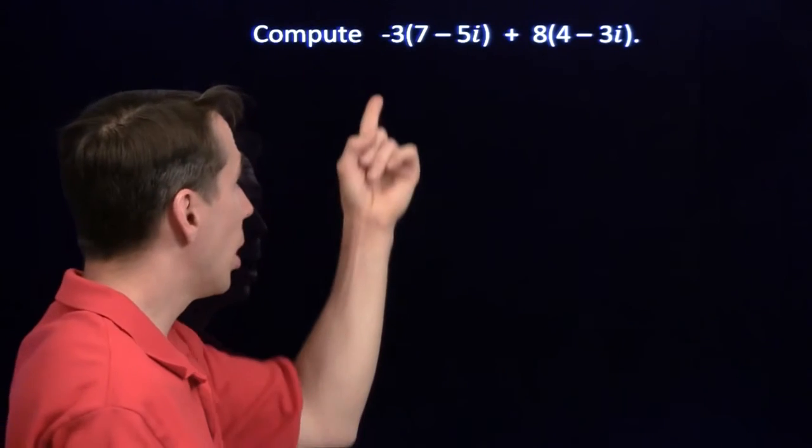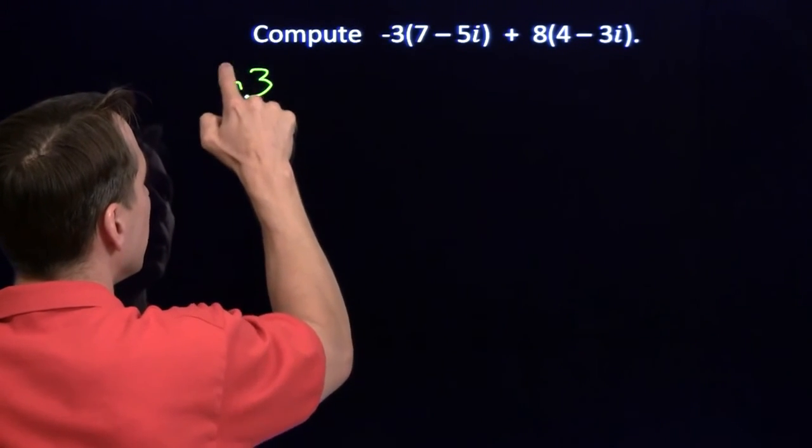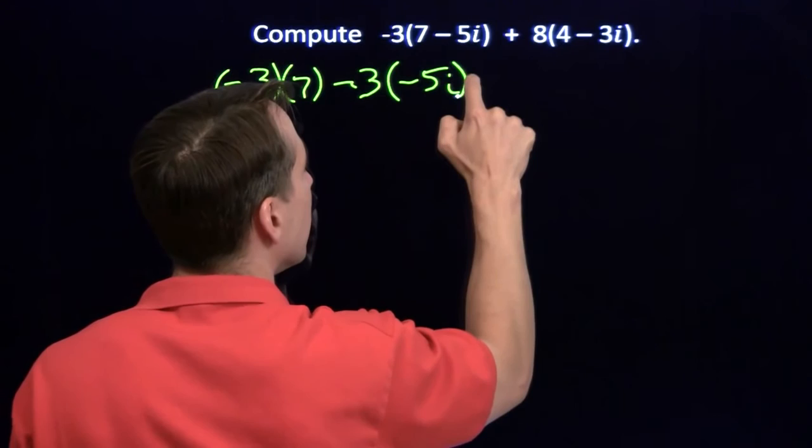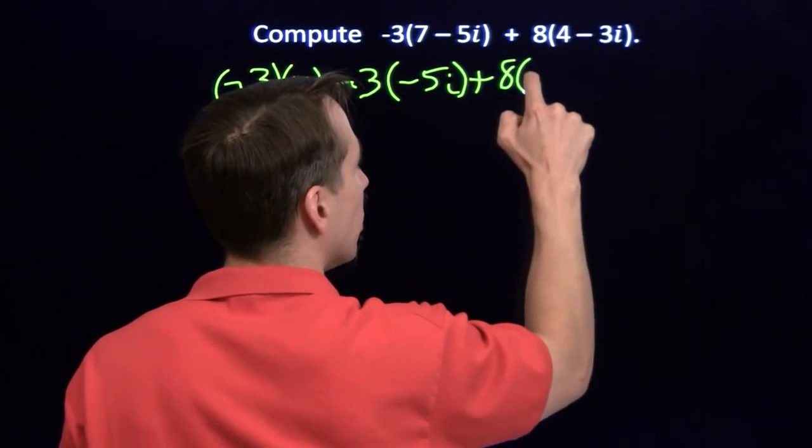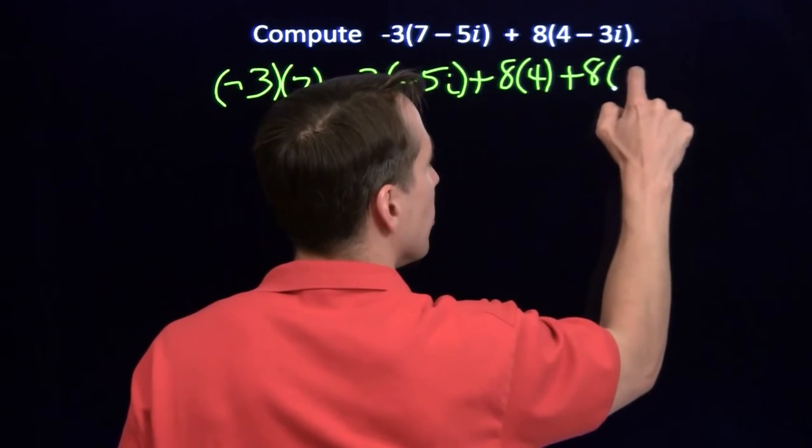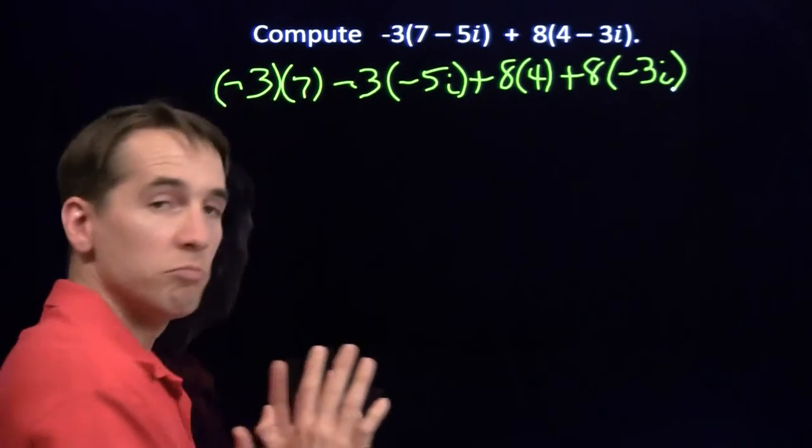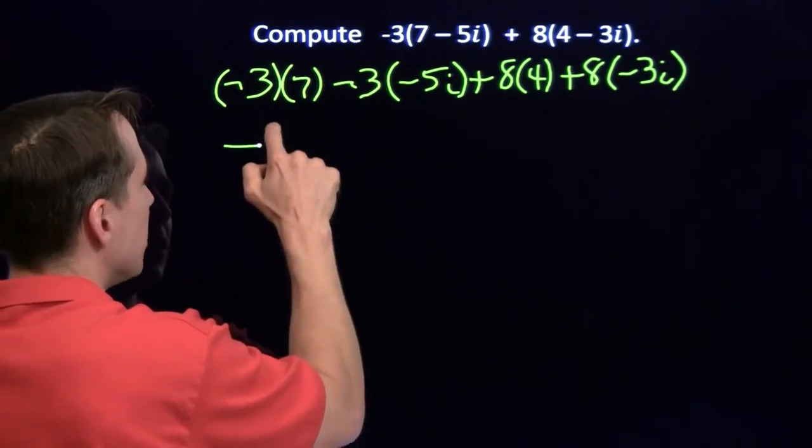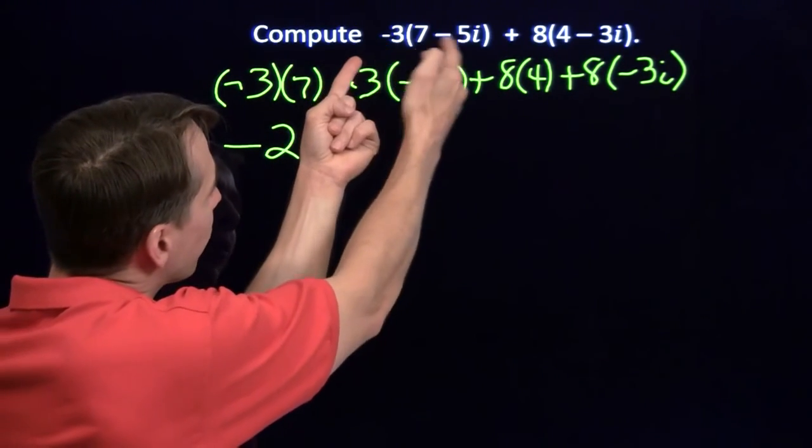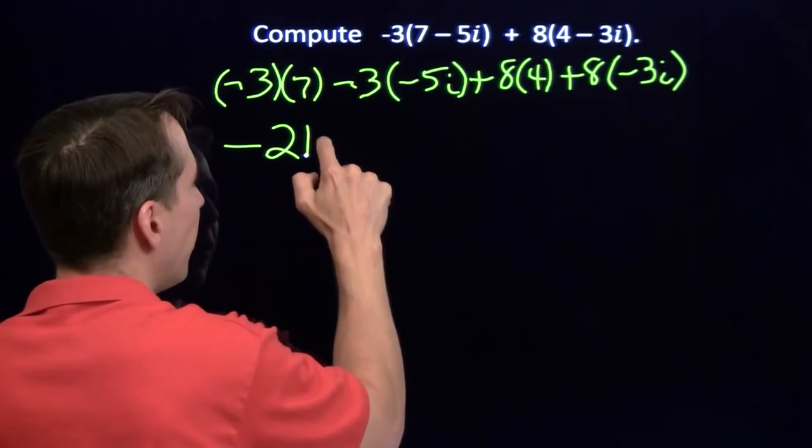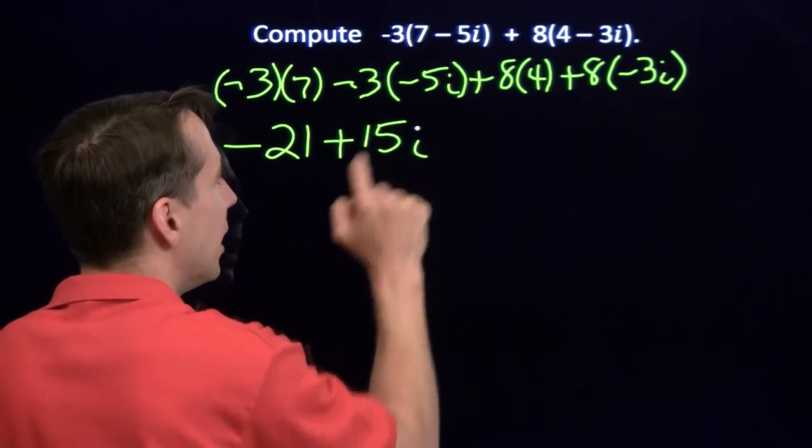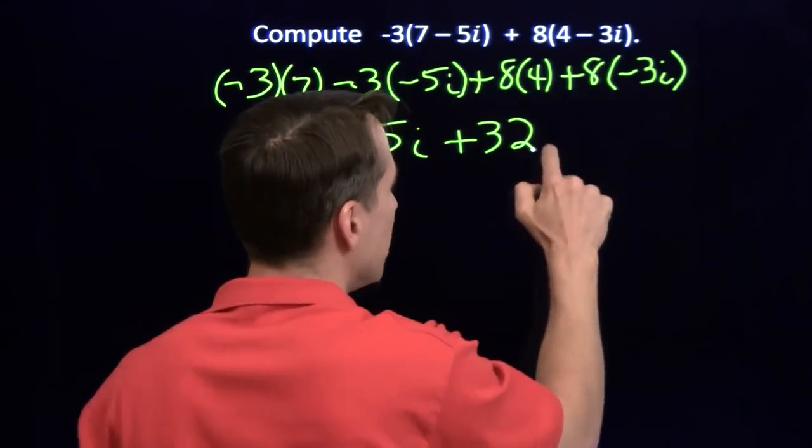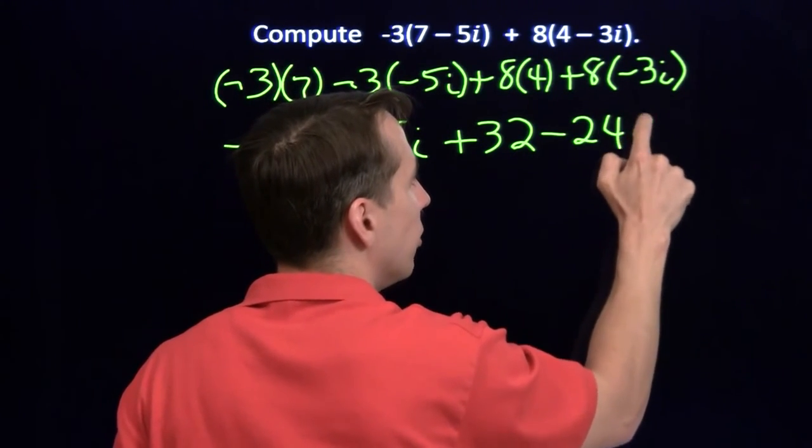Start off just with the distributive property. Negative 3 times 7, minus 3 times minus 5i, plus 8 times 4, plus 8 times minus 3i. Very important here, just make sure you get your signs right. Negative times a positive, negative 3 times positive 7 is negative 21. Negative 3 times a negative 5i, it's going to give us a plus 15i. 8 times 4 is 32. 8 times a negative 3i is minus 24i.